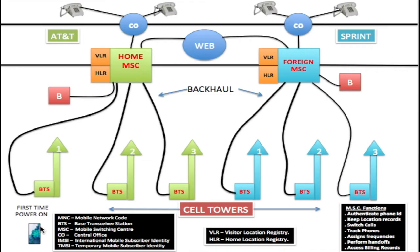However, if the network code is different, the phone knows it's on a foreign network. For example, if the phone is in the Sprint area and powers on for the first time, it would get the Sprint network code rather than the home network code, so it would display roaming. If the phone doesn't get any code at all, it knows it's out of range of any network, so it would display no service.